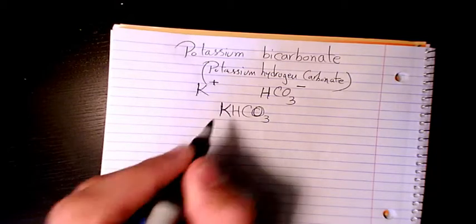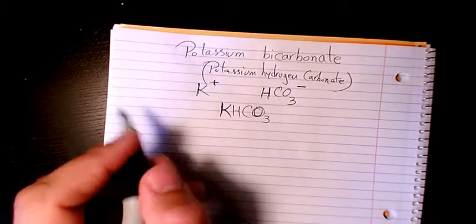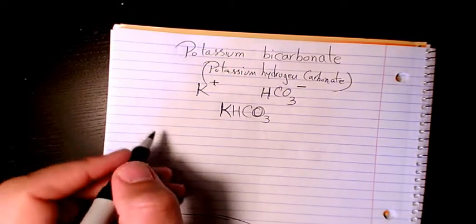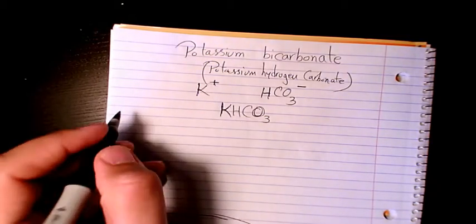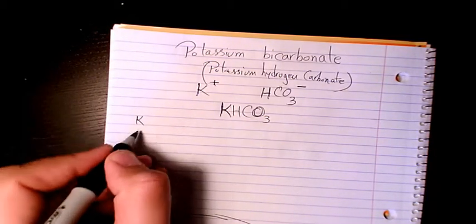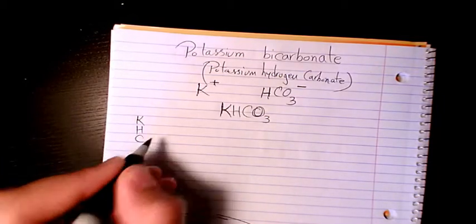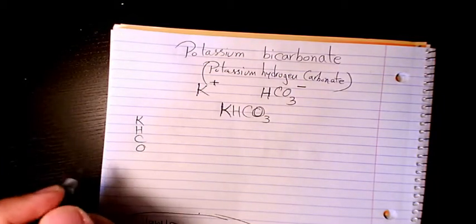So that's the molecular formula for potassium bicarbonate. Now I want to show you how to find out the molar mass of it. First of all, I need to list all the elements: potassium which is K, hydrogen is H, carbon is C, and oxygen is O.